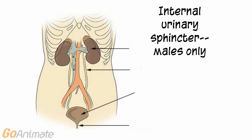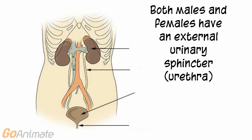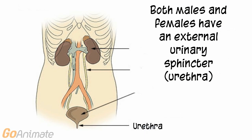The urethra carries urine out of the body. Males have an internal urinary sphincter muscle which shuts off urine flow during sexual arousal. Both males and females have external urinary sphincter muscles, which relax when urinating.